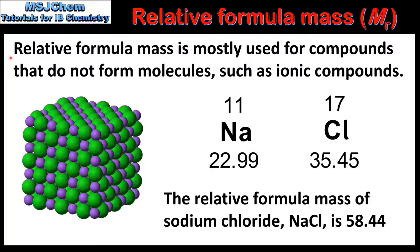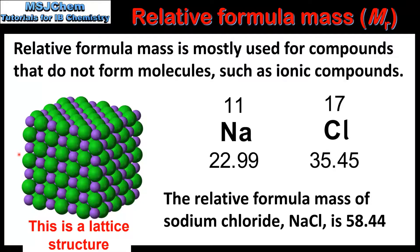We'll end the video by looking at Relative Formula Mass. The term Relative Formula Mass is mostly used for compounds that do not form molecules, such as ionic compounds. On the left we can see the structure of an ionic compound. Because ionic compounds do not form molecules, we use the term Relative Formula Mass instead of Relative Molecular Mass. For example, the Relative Formula Mass of Sodium Chloride, which is NaCl, is 58.44. We calculate this by adding together the Relative Atomic Masses of Sodium and Chlorine.